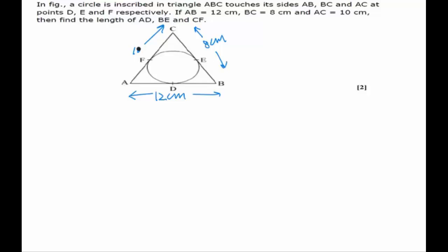And we have to find out the measures of AD, BE, and CF. So we say that let AD and AF, which are equal, be equal to x centimeters. AD and AF are equal because the tangents drawn from an external point are equal. Tangents from external point to a circle are equal.